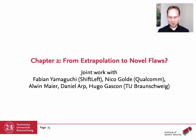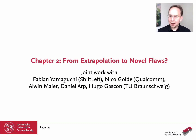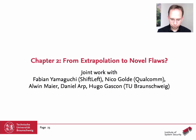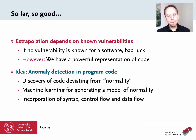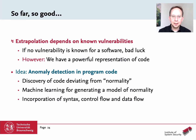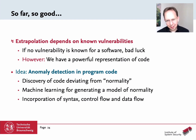So how did we proceed — chapter two of this talk? This was just the first half year of Fabian Yamaguchi's PhD thesis, and we then did a lot more work with more people joining: Nico Golde, Alvin Meier, Daniel Pugelgaskan, Christian Bersenegger, and others. We wrote a lot of papers. The first thing that happened after publishing was people said: 'This is great, but you need one vulnerability as a starting point — so it's useless.' And it's true: if you have a new piece of software with no known old vulnerability, extrapolation cannot be used.